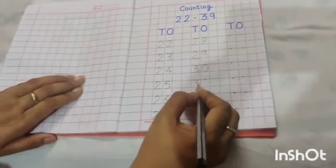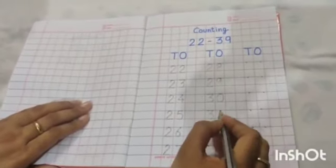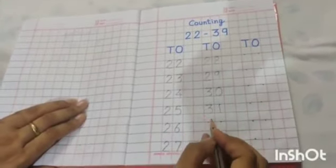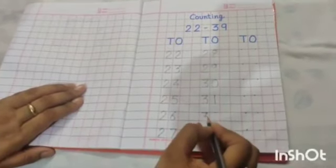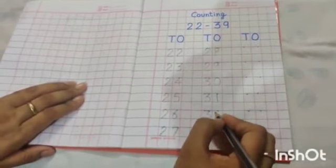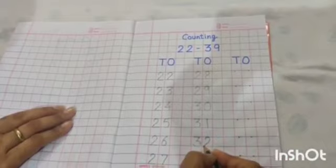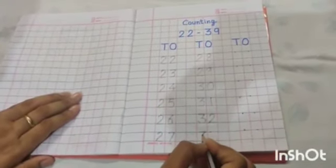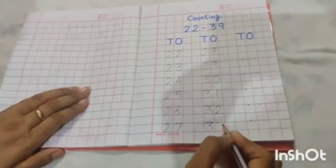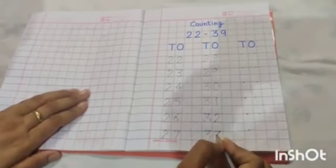Next number is 31. After 31, 32. Then 33.